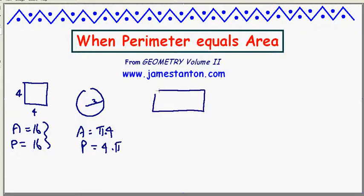There are rectangles with this property. For example, a 3 by 6 rectangle has area 18 and its perimeter is 3 plus 3 and 6 plus 6, 18.